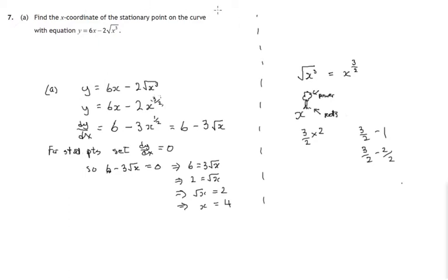So find the x-coordinate of the stationary point in the curve. And there is only one stationary point. There's only one place where that curve bends. It's either a maximum or a minimum. We haven't been told which. But x equals 4.